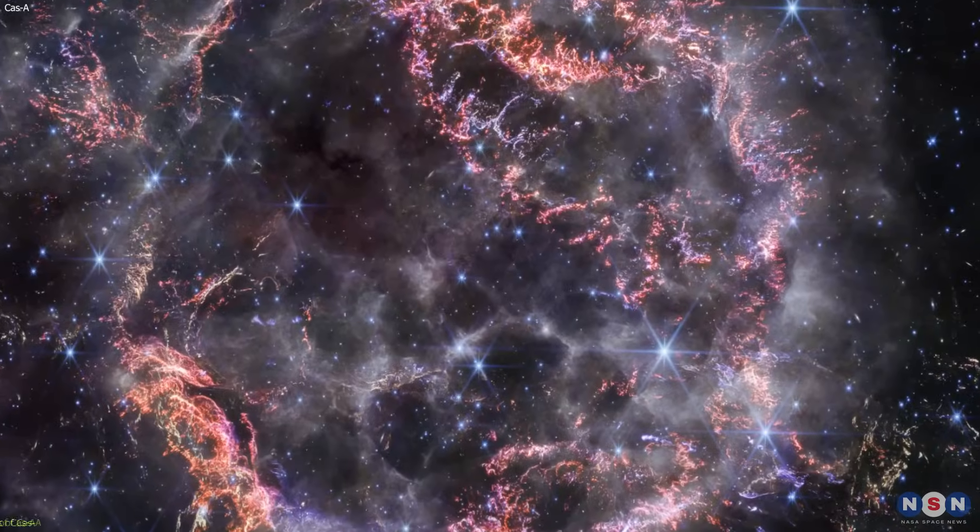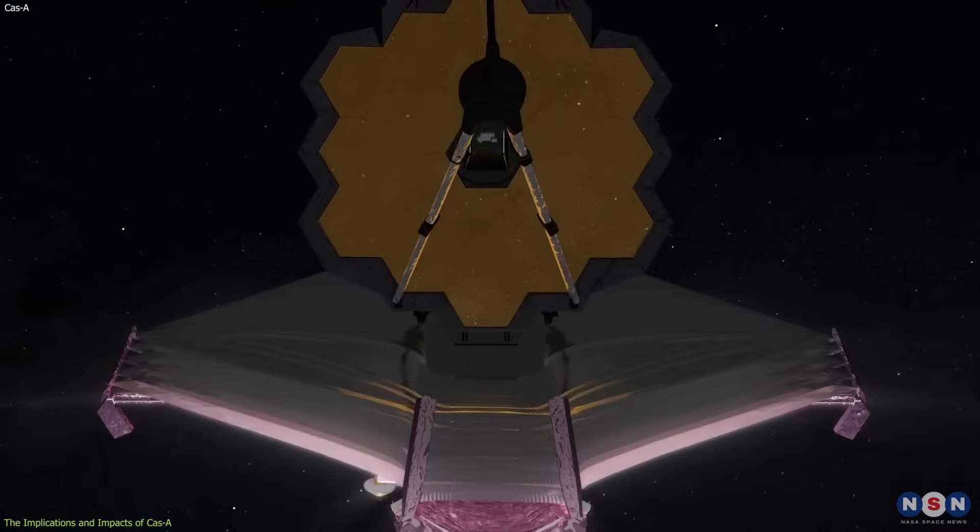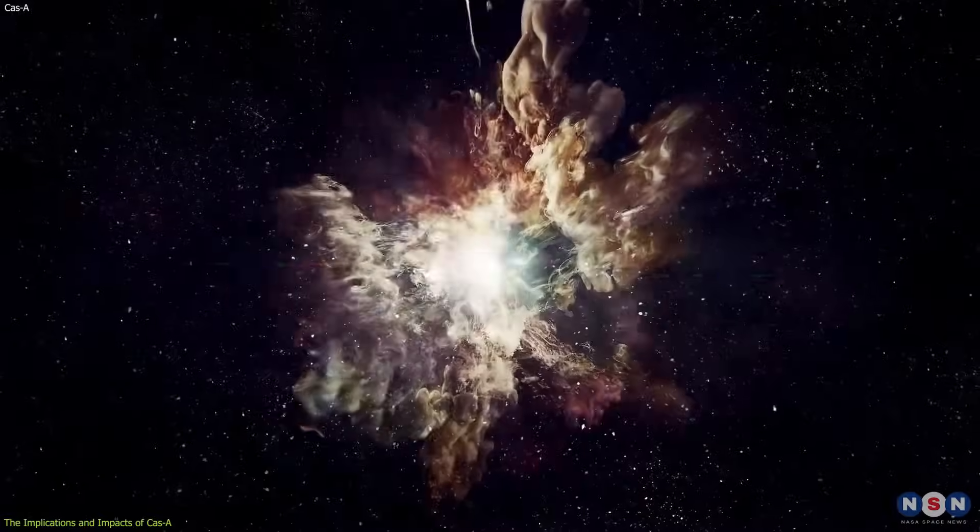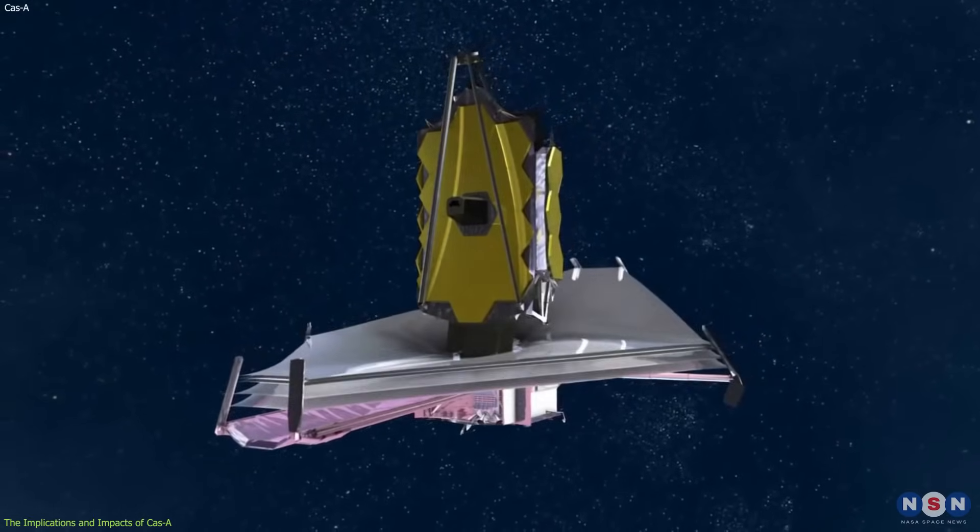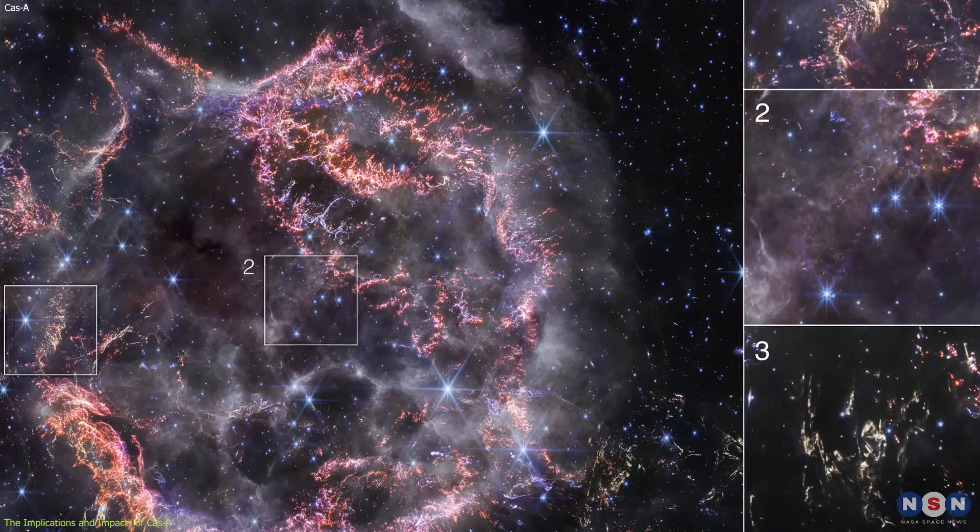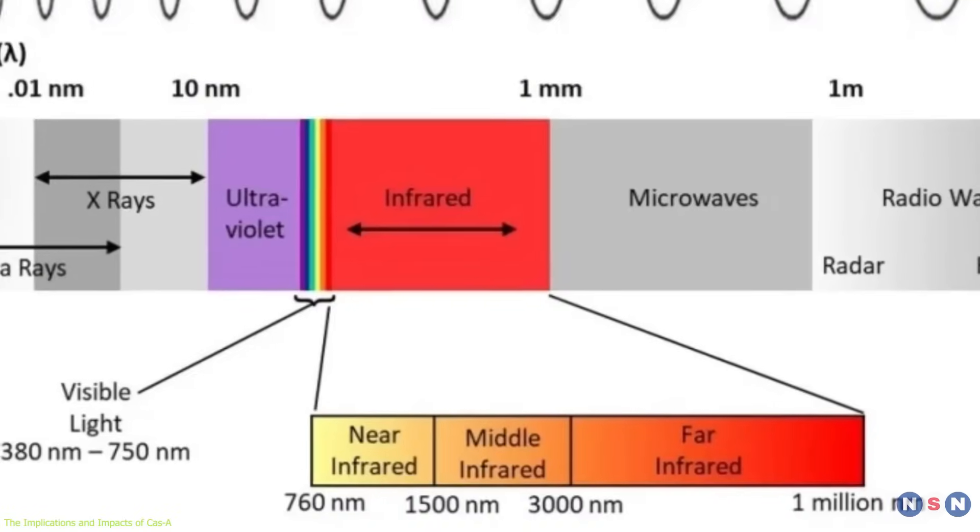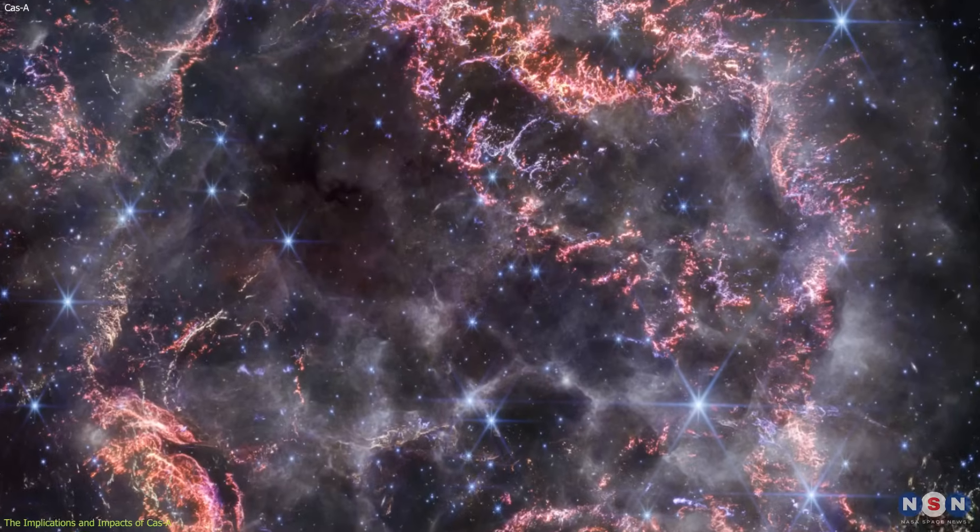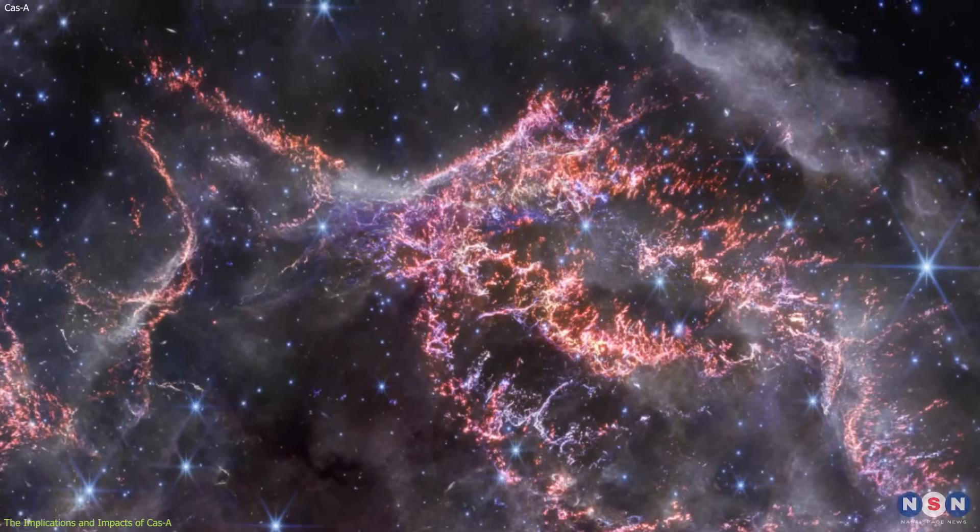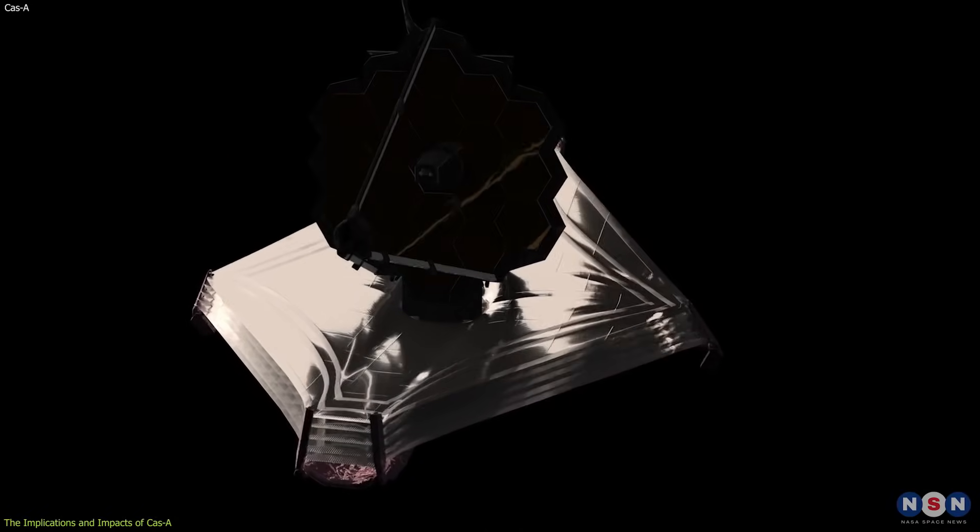Cass A image has impacts for the field of astronomy and the public. It shows us how the James Webb Telescope can provide transformational insight into how the star exploded and how it affects the universe around it. It also shows us how the telescope can reveal new and unexpected features and phenomena that challenge our understanding and spark our curiosity and combine different wavelengths of infrared light to create a more complete and comprehensive picture of the supernova remnant.